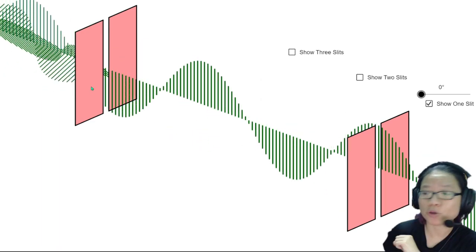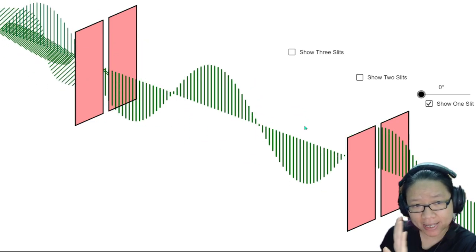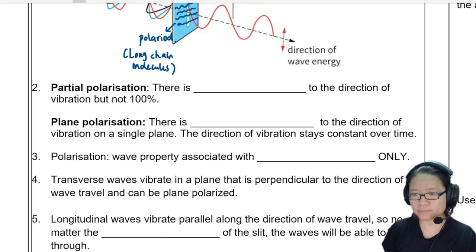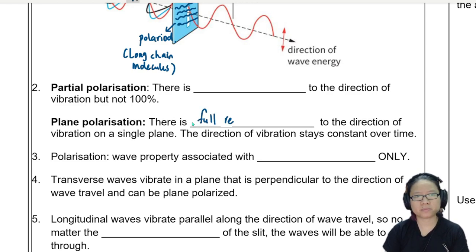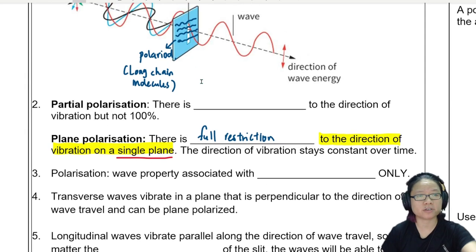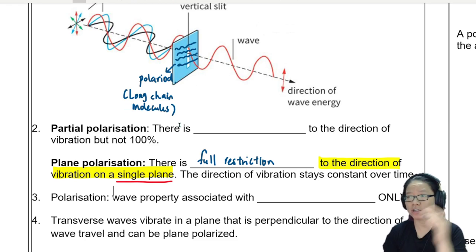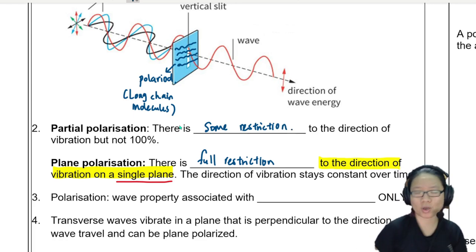This is what polarizing or plane polarizing means - the wave is traveling on one plane of your 3D diagram. When we define plane polarization, we say that there is full restriction to the direction of vibration on a single plane, one plane only. In this particular drawing, it's the vertical plane. Whereas partial polarization means there is some restriction to the direction of vibration, but not 100%.